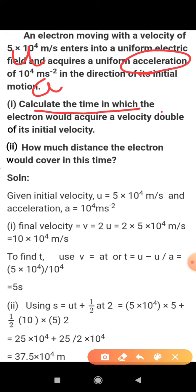Now they are saying calculate the time in which the electron would acquire a velocity double of its initial velocity. Initial velocity is given as 5 × 10⁴ and it has to acquire velocity double of this. Suppose initial velocity is x, so final velocity should be double of this, means 2x. If u is x, v has to be 2x.